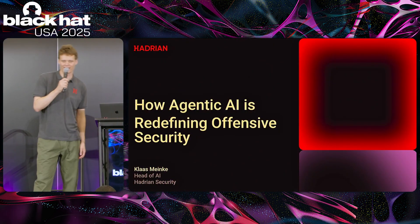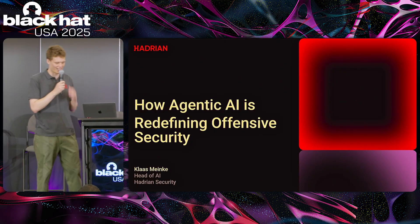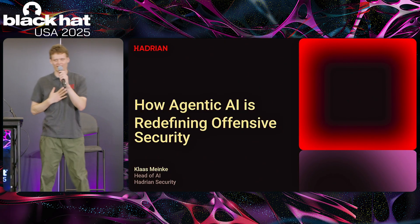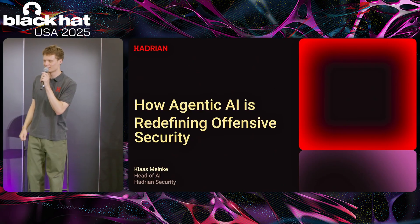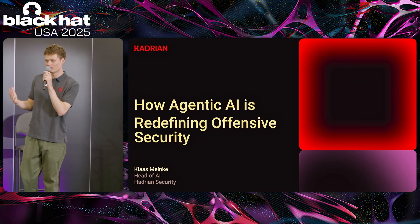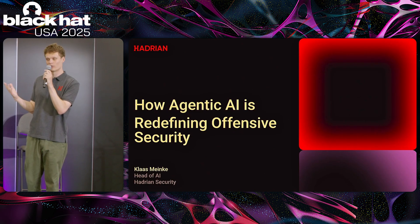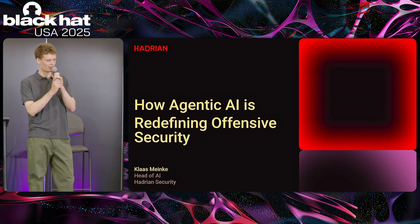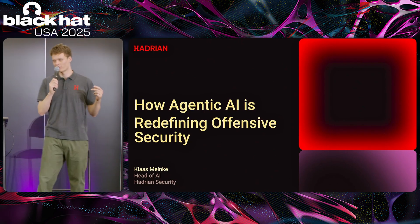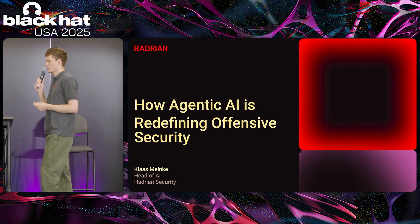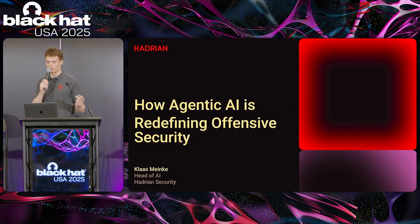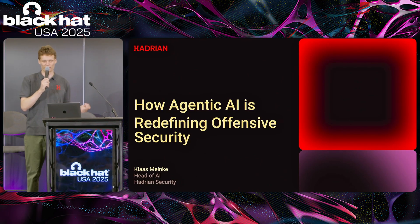I'm Klaus Meinke, I'm the head of AI at Hadrian Security. The reason that I started working in machine learning and artificial intelligence is to make machines be able to do things that it seems like only humans should be able to do — things that should require human intuition. Whether that's recognizing a picture of an animal, discovering a planet orbiting another star, or hacking another machine.